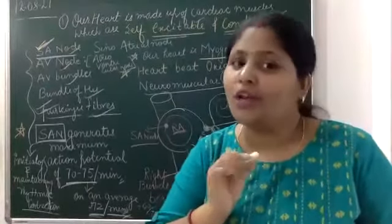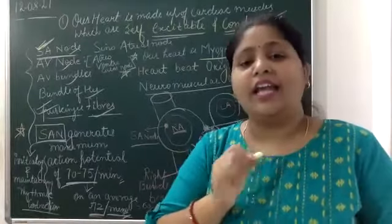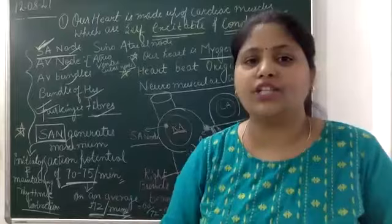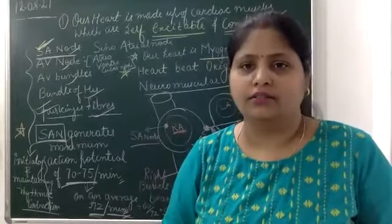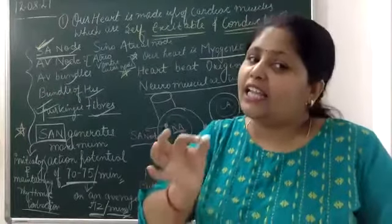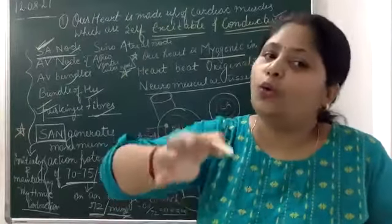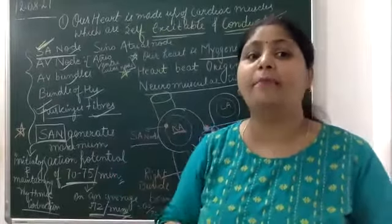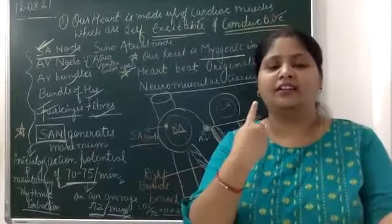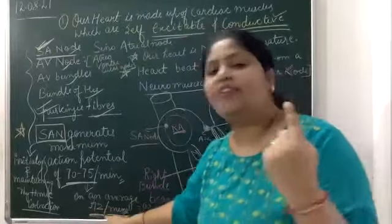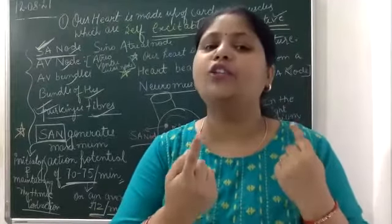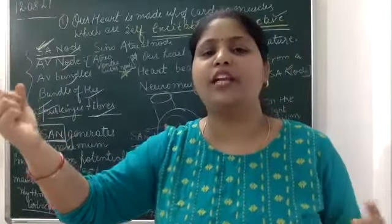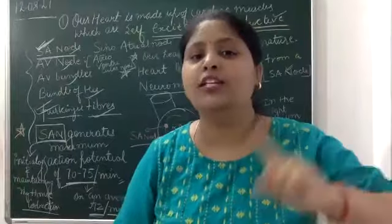Remember one important thing here: the rate of heartbeat is controlled by two mechanisms — only the rate, not the initiation and not the conduction. The initiation is performed by our neuromuscular nodal tissue, and conduction also. But the rate — which is our normal 72 per minute — is controlled by two mechanisms: one is nervous system regulation, and the second is hormonal regulation.